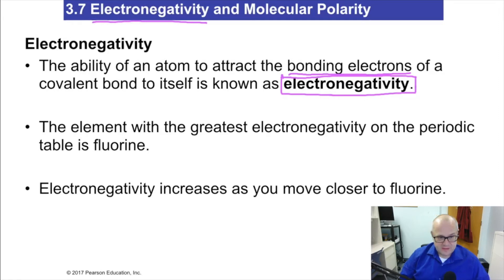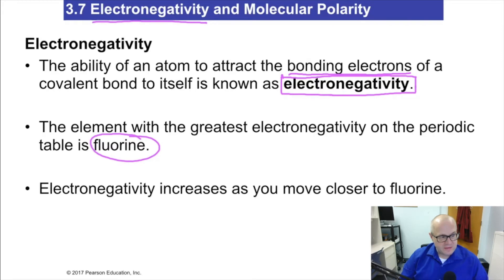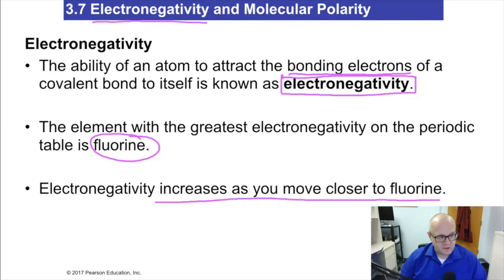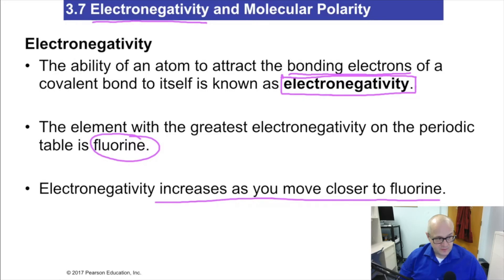Metals have a very low electronegativity compared to nonmetals, which have a very high electronegativity. In fact, fluorine is the most electronegative atom. Fluorine's electronegativity is 4.0 — it's a four-point scale. As you move closer to fluorine on the periodic table, electronegativities increase. Conversely, as you move away from fluorine, electronegativities decrease.